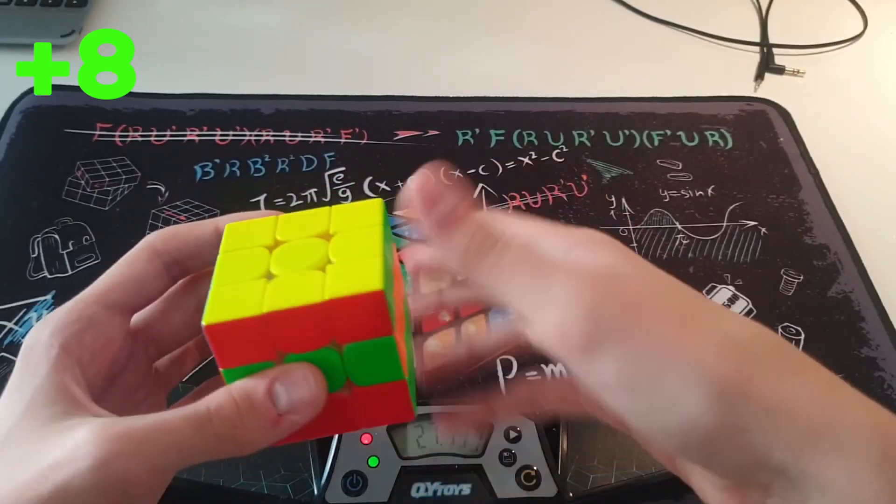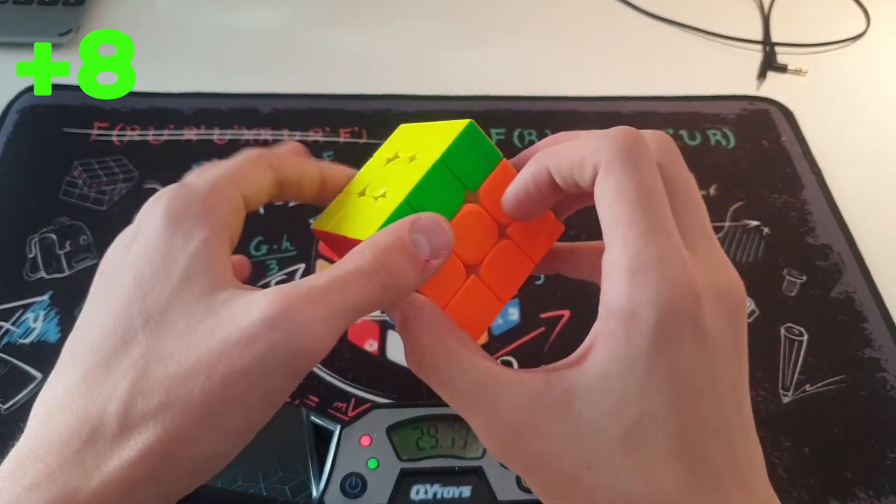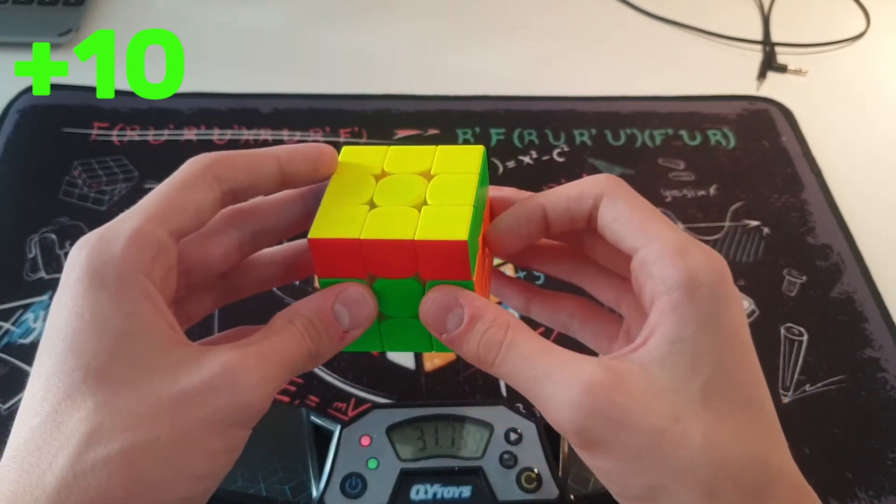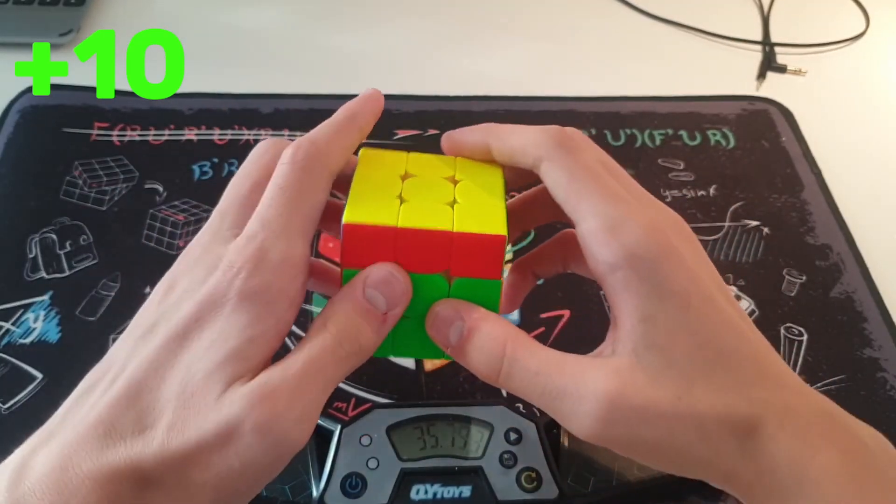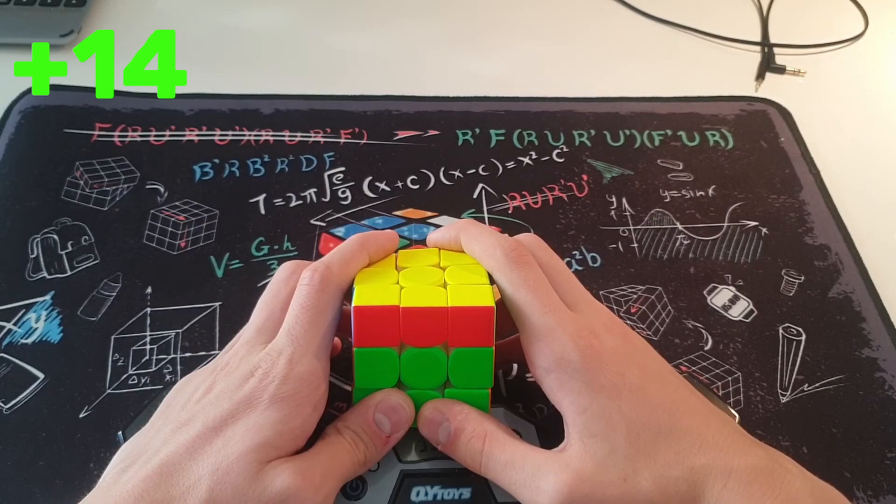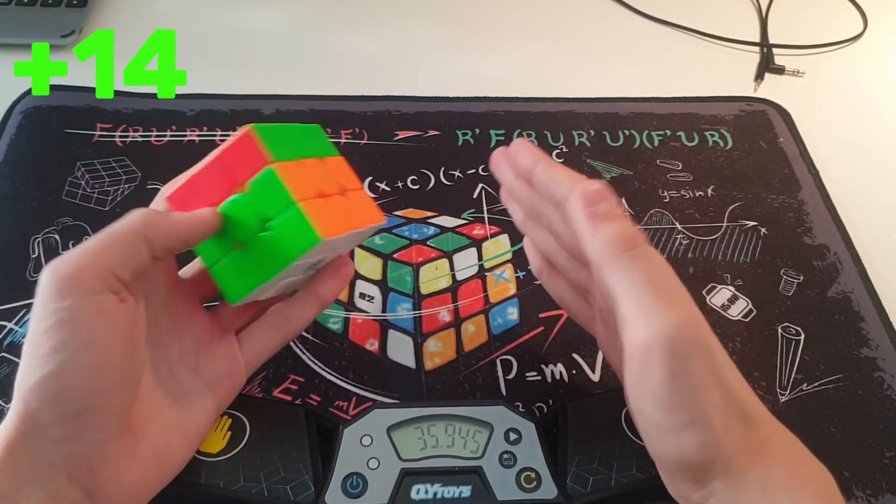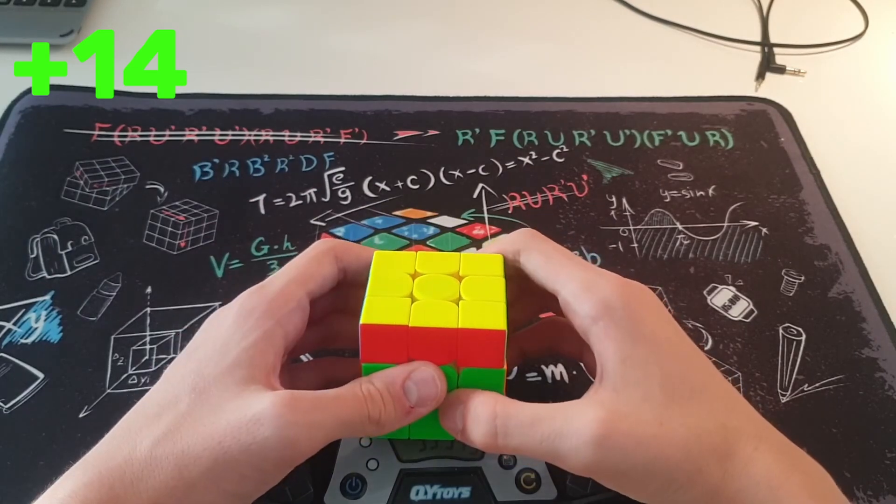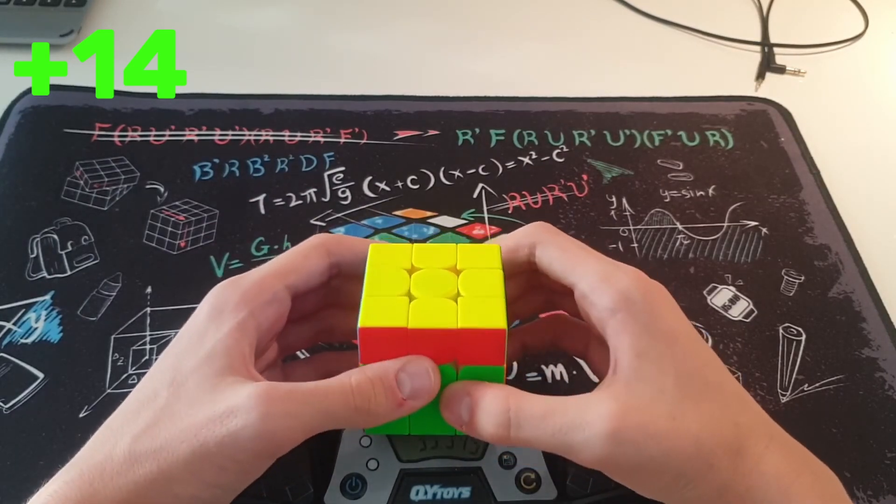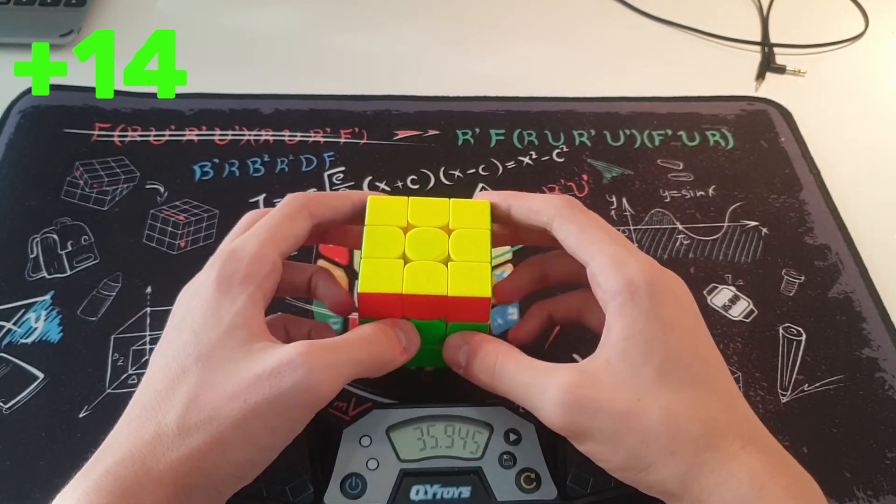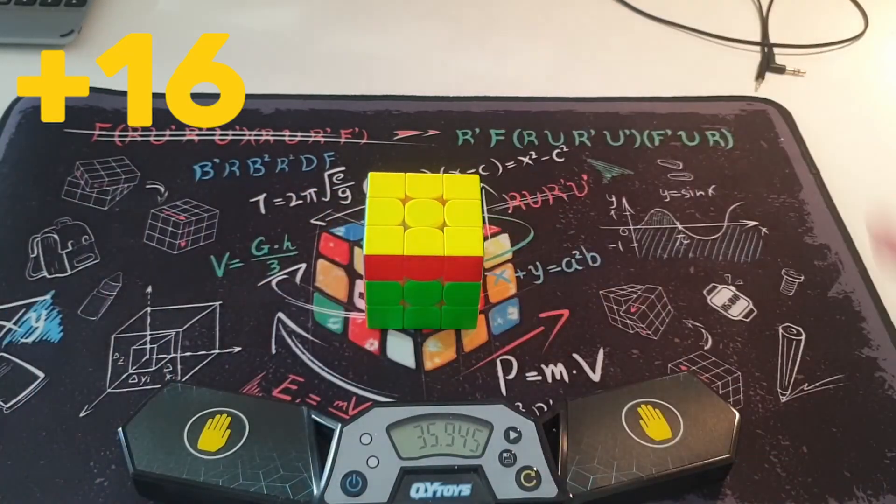And once you've finished your solve, leave it one turn away from actually being solved, like I showed you before. Then, this is what you do next. So the first step is to stop the timer incorrectly with anything but your palms. And the next one is to have your hands on the cube when you stop the timer. And the last step to get your legendary plus 16 is to touch the cube.